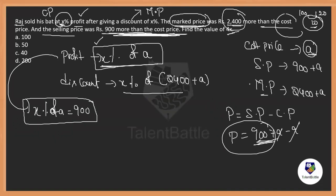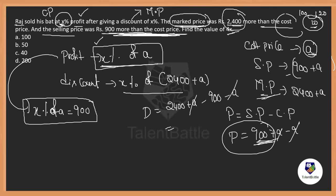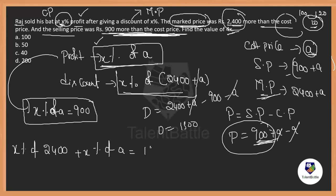Discount is always MP minus SP. So discount = (A + 2400) − (A + 900). A and A cancel, giving 2400 − 900 = 1500. So discount equals 1500. Since discount is X% of MP = X% of (A + 2400), we can write: X% of 2400 + X% of A = 1500.